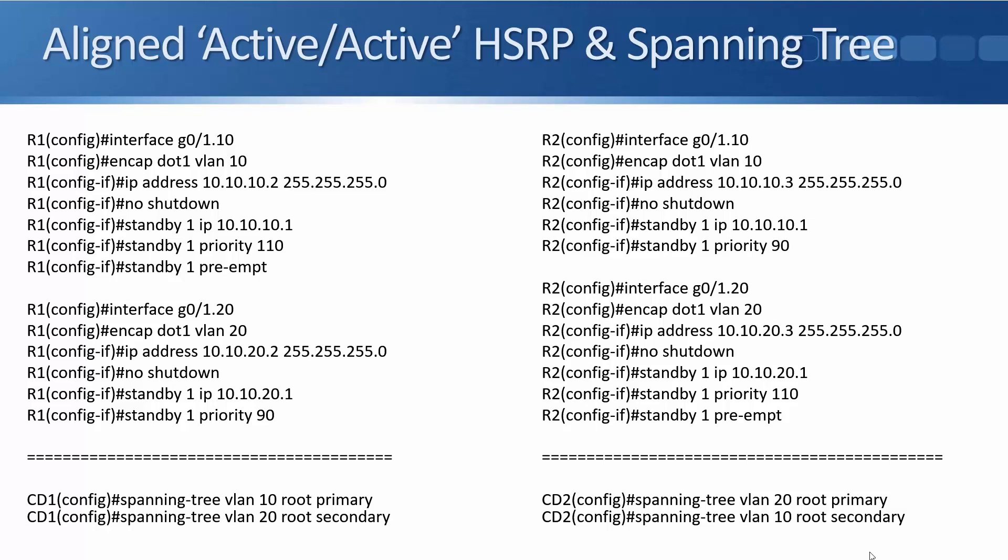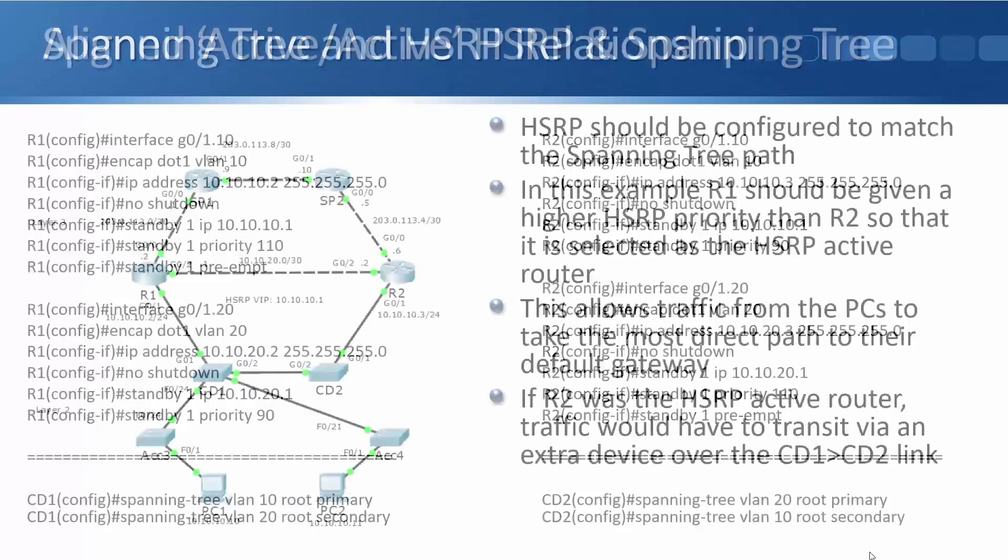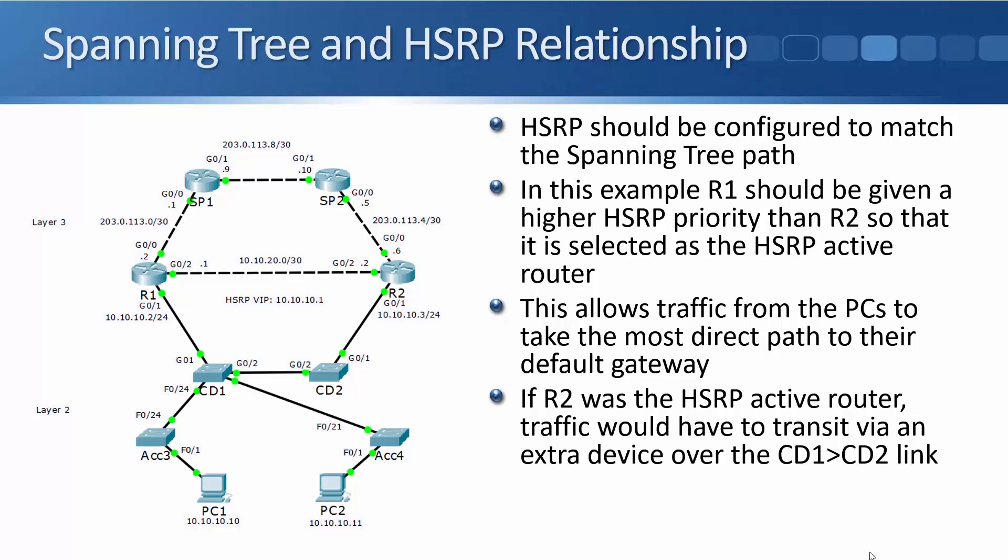On my switches, on core distribution CD1, I've set spanning tree VLAN 10 root primary and spanning tree VLAN 20 root secondary. The other way around on CD2 — so on CD2 it's spanning tree VLAN 10 root secondary. So R1 will be selected as the active HSRP gateway for VLAN 10 and CD1 will be selected as the root bridge with spanning tree. Going back to the diagram, all traffic for VLAN 10 is going to go up and down the left path via CD1 and R1.